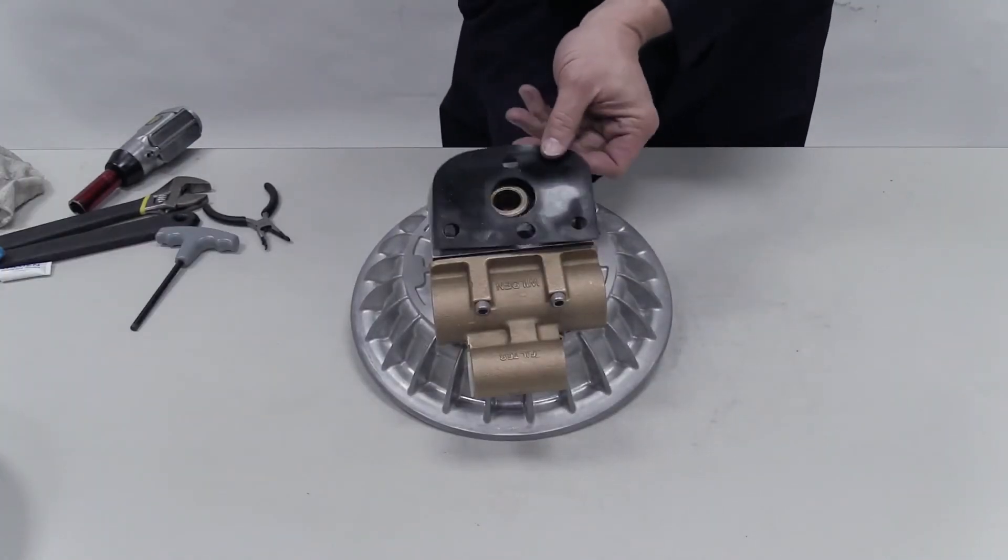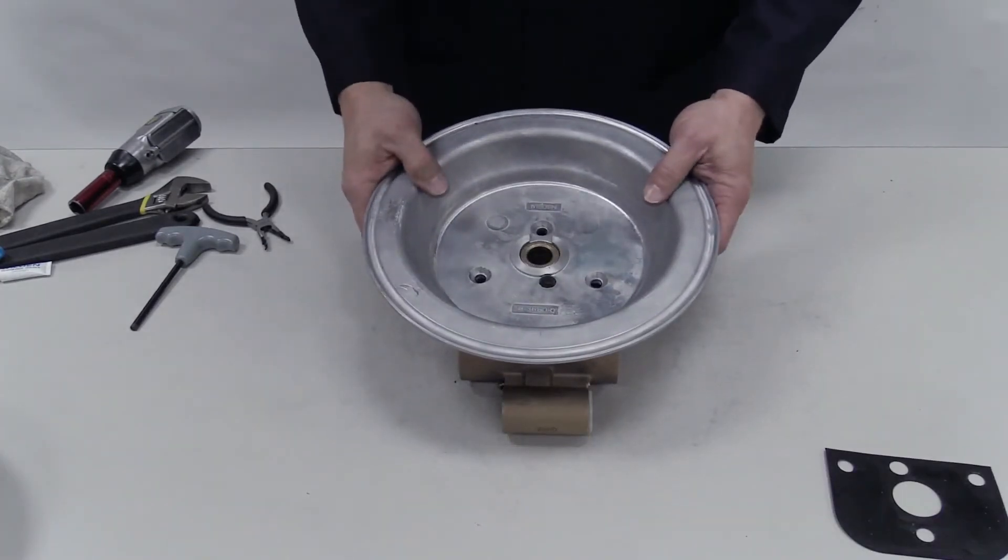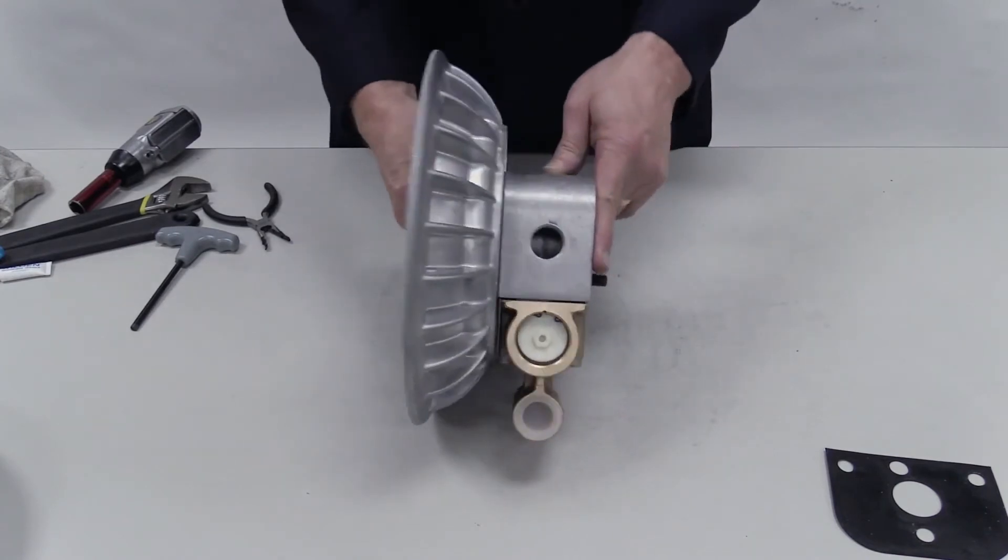Install the block gasket and air chamber, taking care to align the holes. Insert the three air chamber screws and hold them in place as you turn it over.